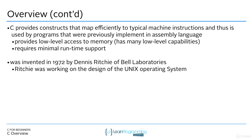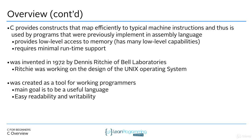A little history: C is an older language. It was invented in 1972 by Dennis Ritchie of Bell Laboratories. He was working on the Unix operating system, which is a precursor to Linux. It was created as a tool for working programmers — the main goal was for it to be useful and easily readable and writable. Readability means looking at the program and being able to understand what's going on quickly. Writeability means being able to write code quickly and efficiently — so if you want to add two numbers, you write one line of code.